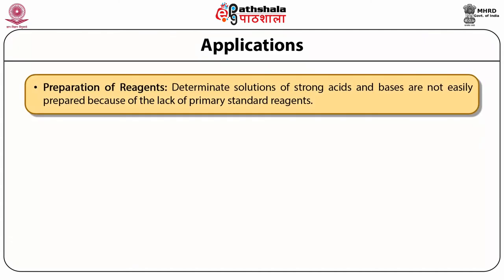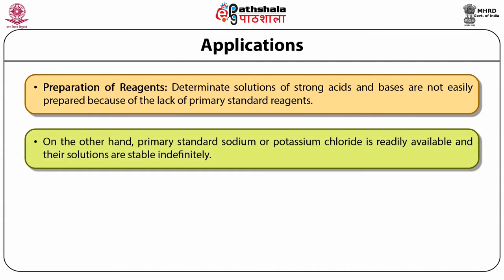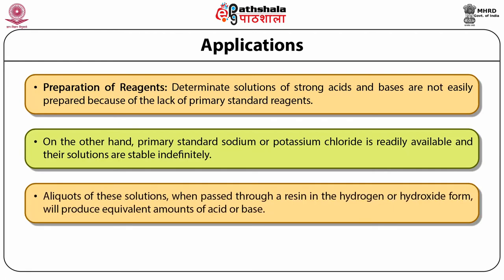Regarding preparation of reagents: determinate solutions of strong acids and bases are not easily prepared because of the lack of primary standard reagents. On the other hand, primary standard sodium or potassium chloride is readily available and their solutions are stable indefinitely. Aliquots of these solutions, when passed through a resin in the hydrogen or hydroxide form, will produce equivalent amounts of acid or base. Many other solutions which are difficult to prepare or standardize can be made in a similar fashion.